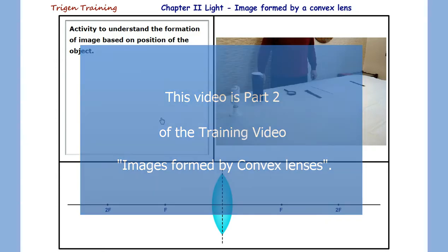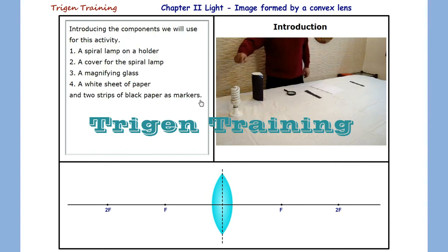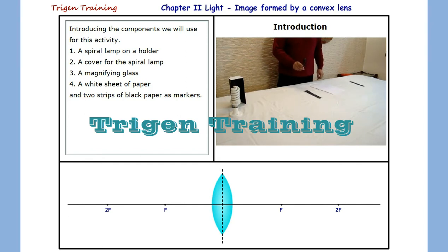Let us carry out a very interesting activity to see how images are formed by the convex lens. For this activity, we require a spiral lamp fitted on a holder, a cover made of black paper for covering the spiral lamp, a magnifying glass which is nothing but a convex lens, a white sheet of paper, and two black strips which we would use as markers.